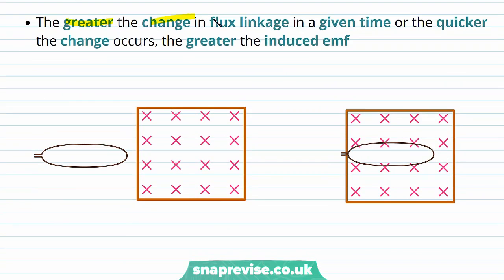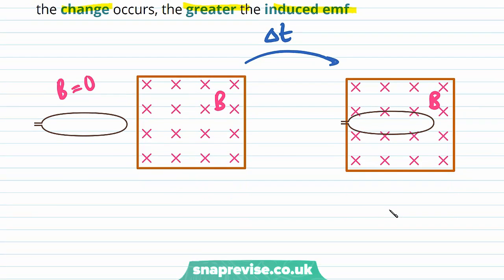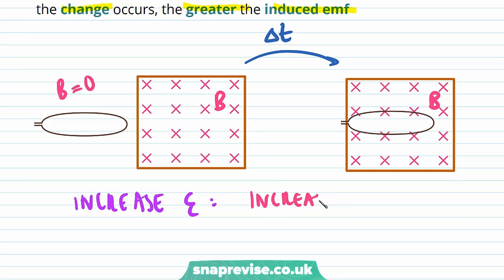The greater the change in flux linkage in a given time, or the quicker the change occurs, the greater the induced EMF. Looking again at the case of our coil entering a uniform magnetic field over a certain time delta T, we can increase the induced EMF by increasing the change in flux linkage by increasing the strength of the magnetic flux density. So we can either increase B, or we can decrease the time over which the change occurs.